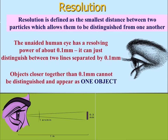So the eyesight resolution is 0.1 millimeter. If you keep materials closer than 0.1 millimeter, the eye is only able to identify them as a single object — it will not distinguish two objects separately, but will identify them as one object. The distance which allows the distinction of materials is called resolution. So generally, eyesight resolution is 0.1 millimeter.